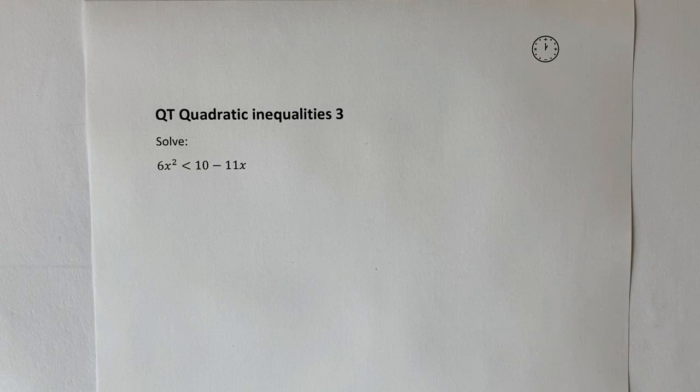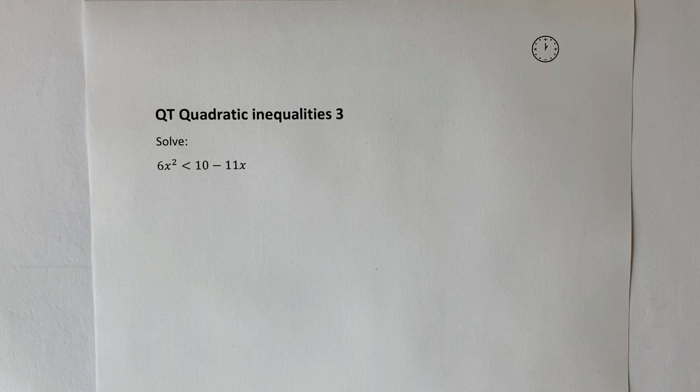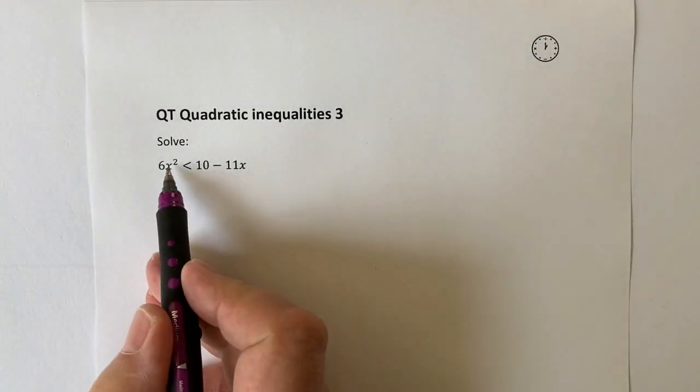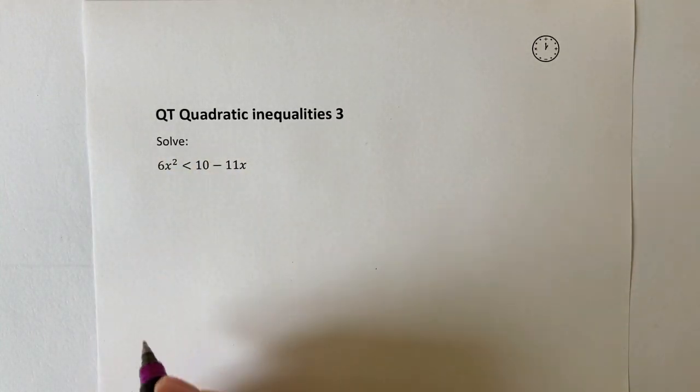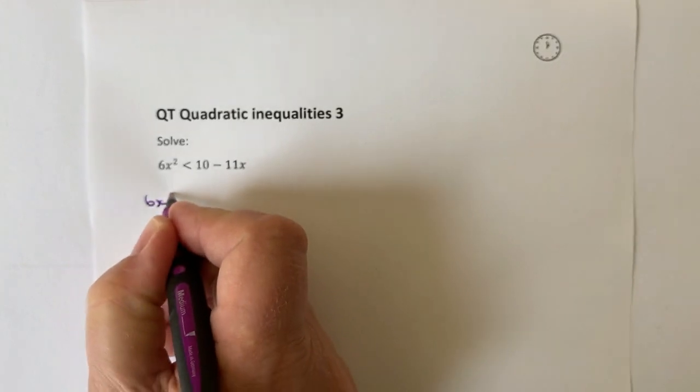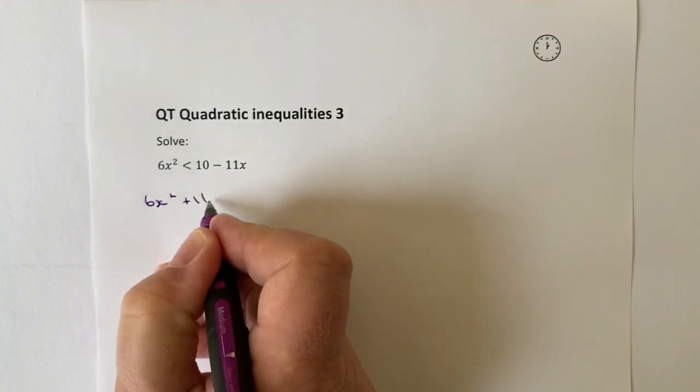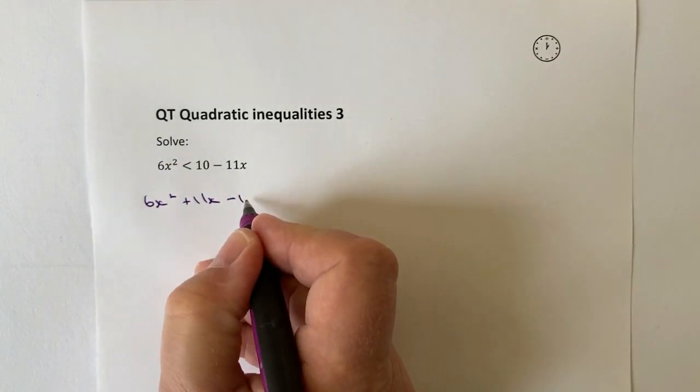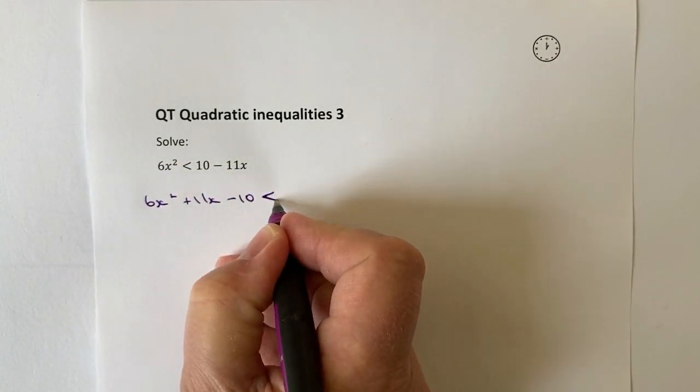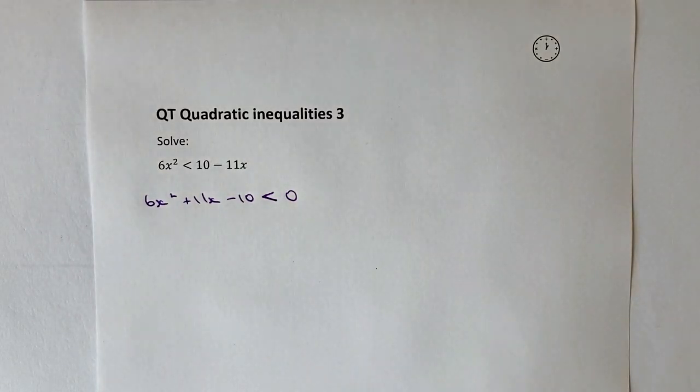So, in order to do that, I need to rearrange the inequality to make it with a zero. If I bring this minus 11x over towards the left-hand side, I'm going to get 6x squared plus 11x, and then this 10 is going to come over towards the left-hand side as well. That'll be minus 10, and that's going to be less than or equal to zero.